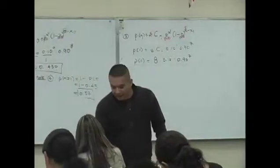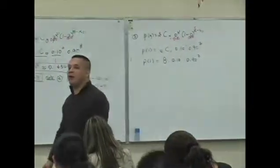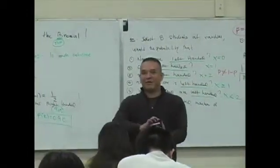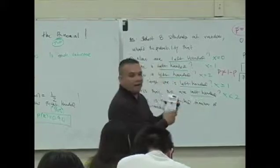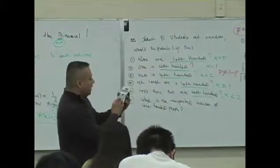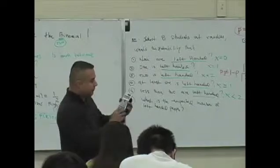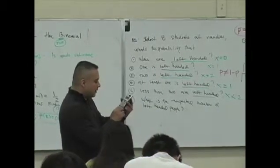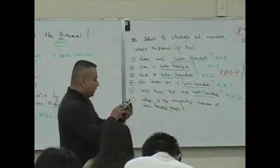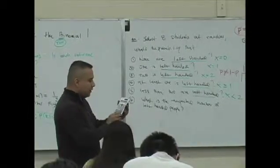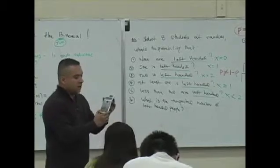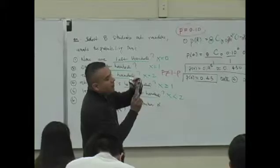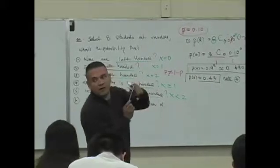The good news is some of your calculators know how to do this. If you got the calculator I asked you guys to get, you're enjoying life because what do you do? You just go: eight times 0.1 to the first times 0.9 raised to the seventh power. Where's our power key? It's that carrot. See this? Then I hit equal.